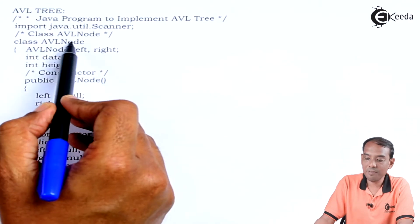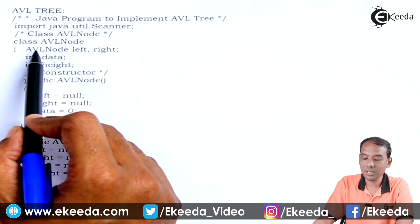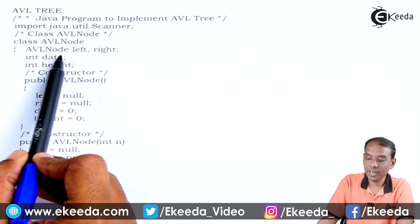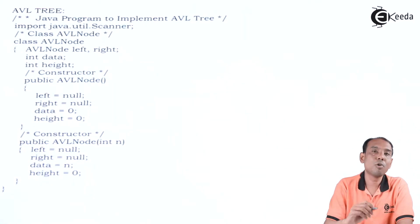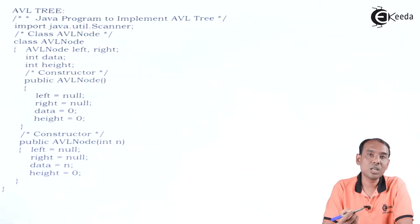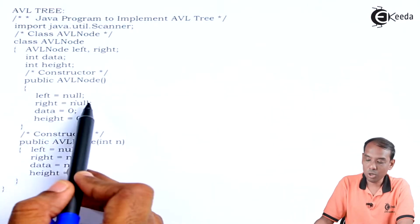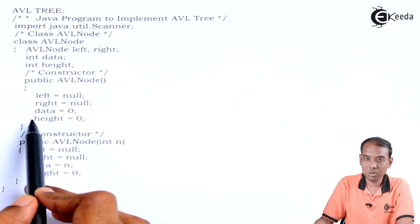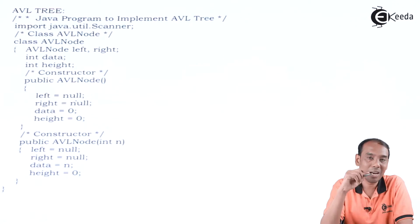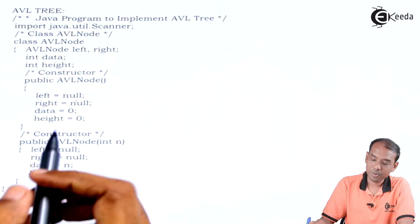I have defined a class called AVLNode. Inside that, I have two reference variables, left and right, of the class AVLNode. Then we have data and height variables. We go for the constructor of AVLNode — you can identify it as a constructor by checking that the function name matches the class name. In this default constructor, left is set to null, right is set to null, data is set to 0, and height is set to 0. Height is always calculated through left minus right.